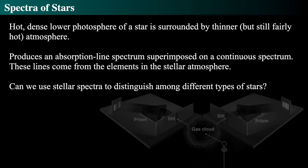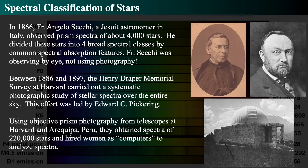When photography was invented in the latter part of the 19th century, people took spectra of stars to see how bright they were at various wavelengths and made huge catalogs. Spectral classification actually started in the 1860s with a Jesuit astronomer in Italy who observed about 4,000 stars by eye through a prism and divided them into four rough groupings based on common spectral absorption features. Between the 1880s and 1890s, the Henry Draper Memorial Survey at Harvard University carried out a systematic photographic study of all stellar spectra over the entire sky, led by Edward Pickering.